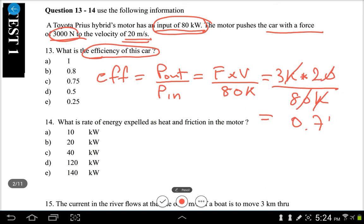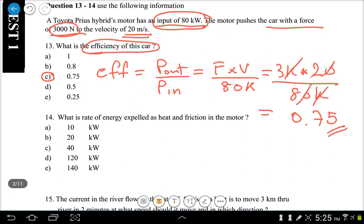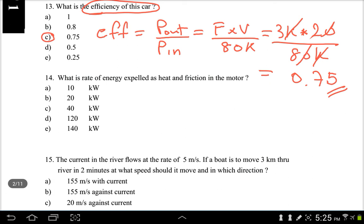Three quarters means 0.75, so the answer for this would be C. Number 14, number 14 is still related to the value we have figured out.